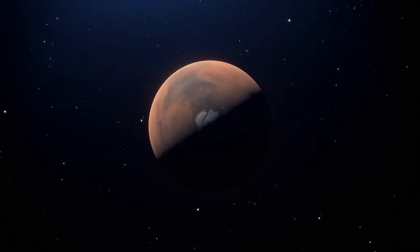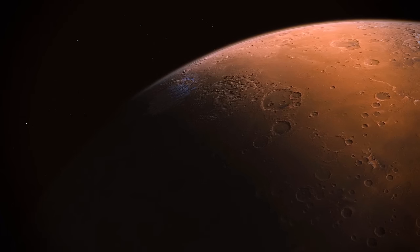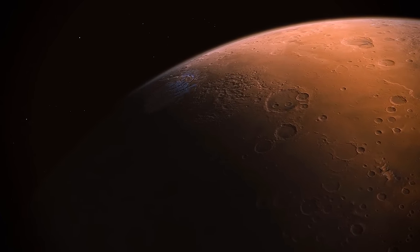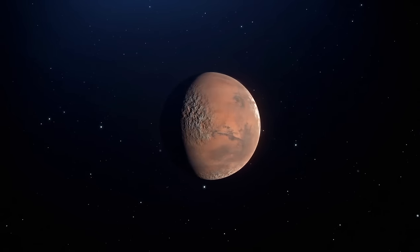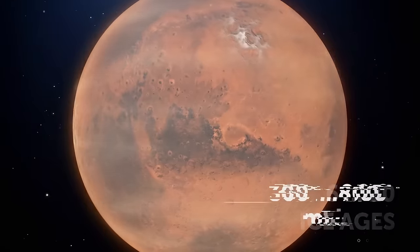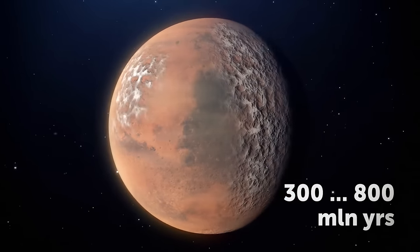Mars also has some interesting glaciers. They've been on its surface for hundreds of millions of years and can tell us secrets of the planet's past. For instance, that's how we found out Mars went through 6 to 20 separate ice ages during the past 300 to 800 million years.